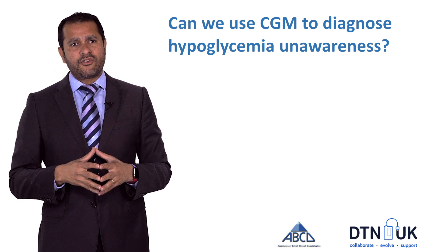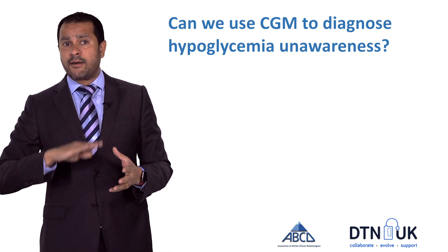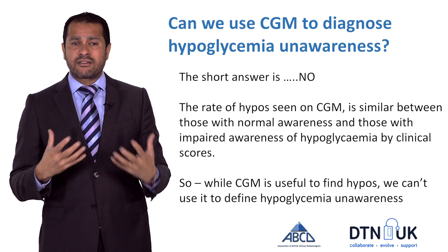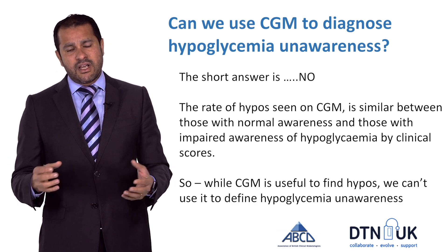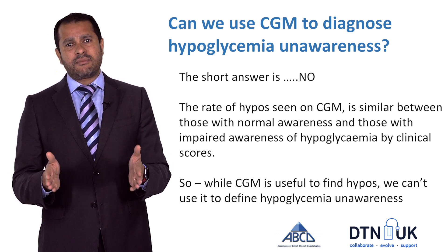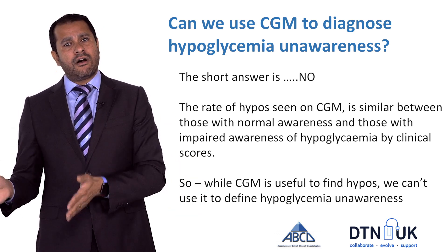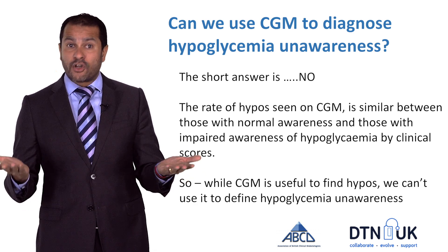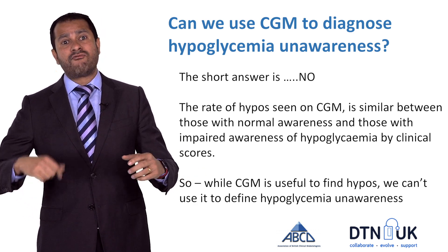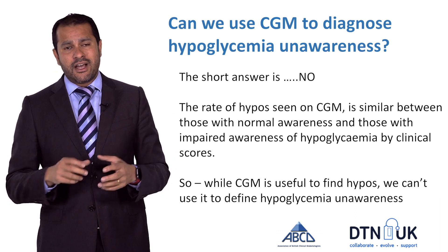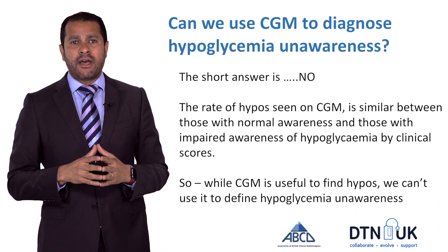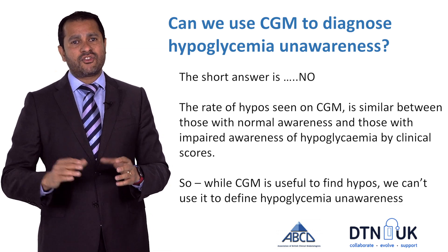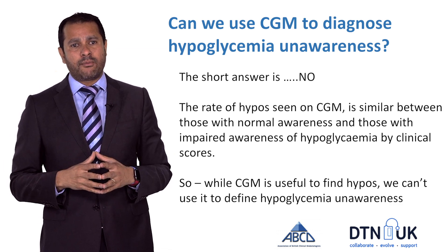When we use continuous glucose monitoring, we uncover a lot of time at hypoglycemia that you may have not been aware of before. This can lead to some anxiety about whether you're losing your awareness. When we look at CGM data from people with and without awareness of hypoglycemia, the time they spent below four seems not to be different. What's different is whether they're recognizing that time or not. So we can't diagnose impaired awareness of hypoglycemia with CGM, but we certainly have to pay attention to the amount of time people are spending in hypoglycemia.